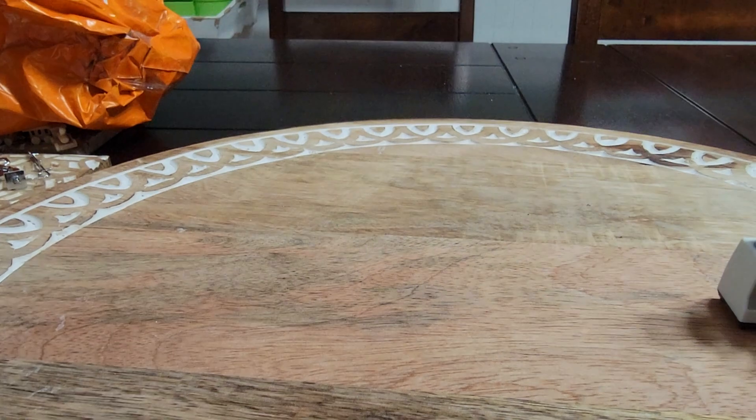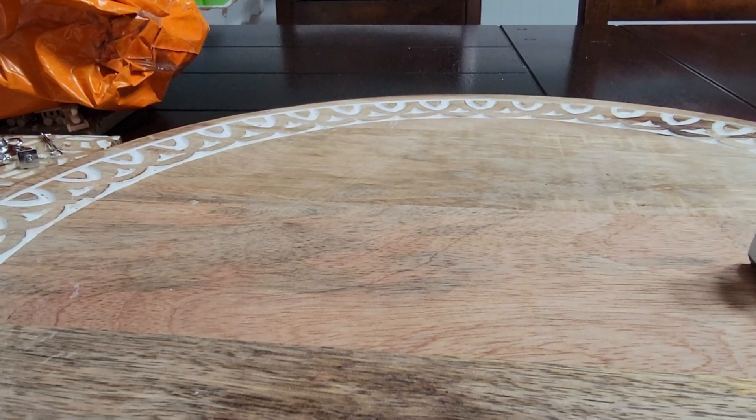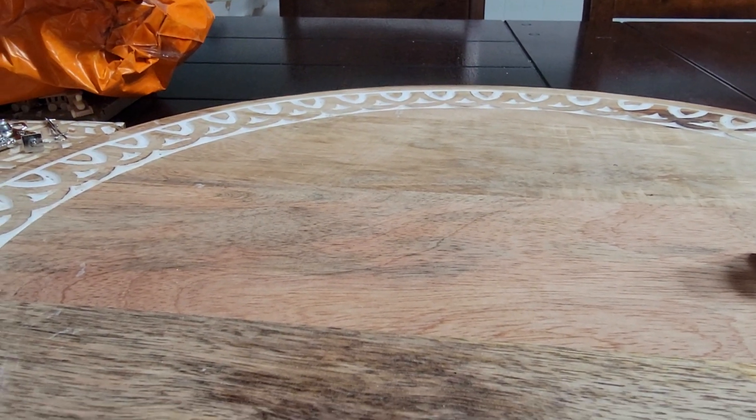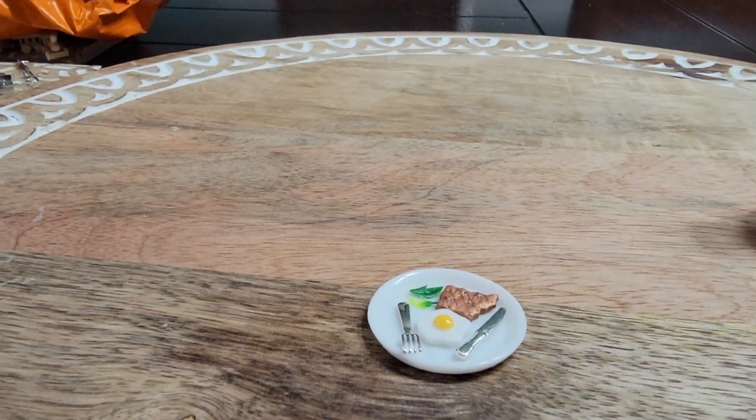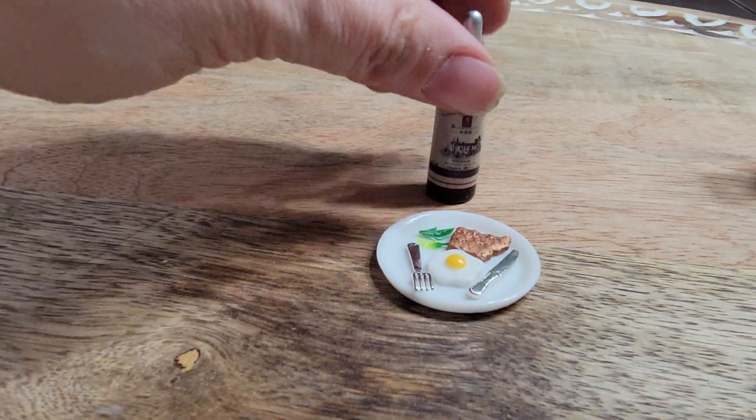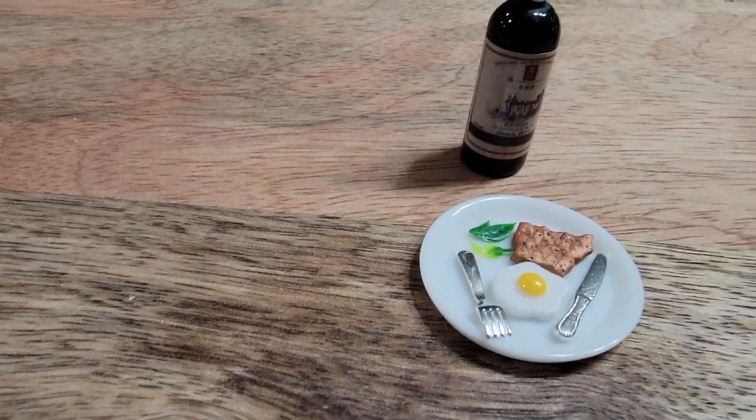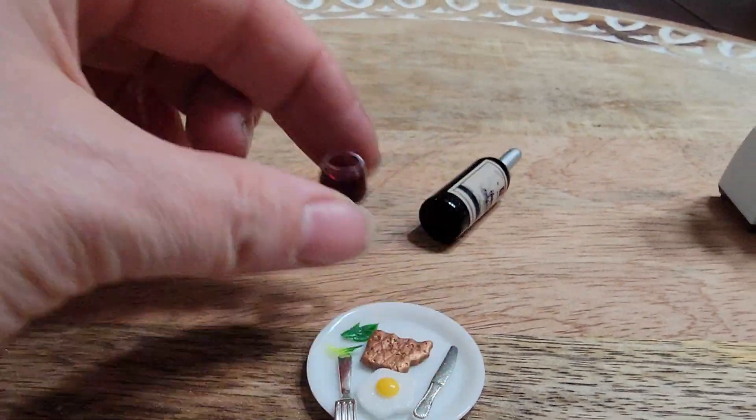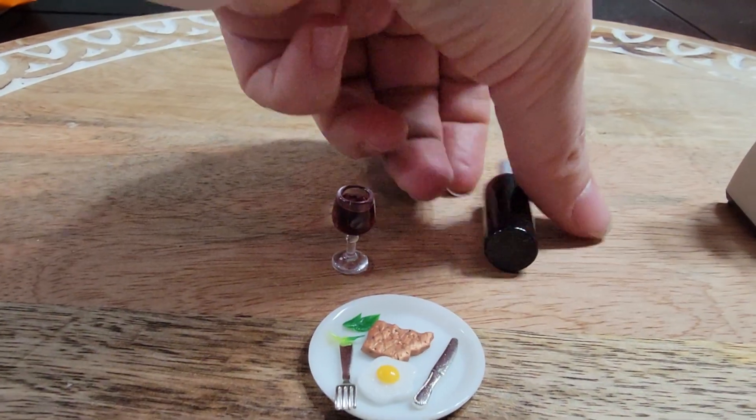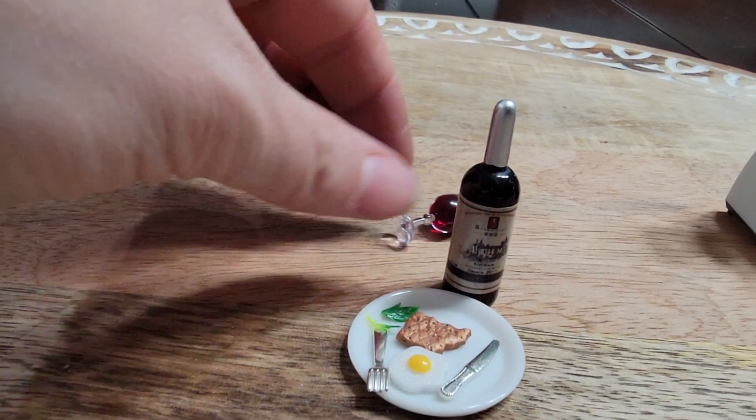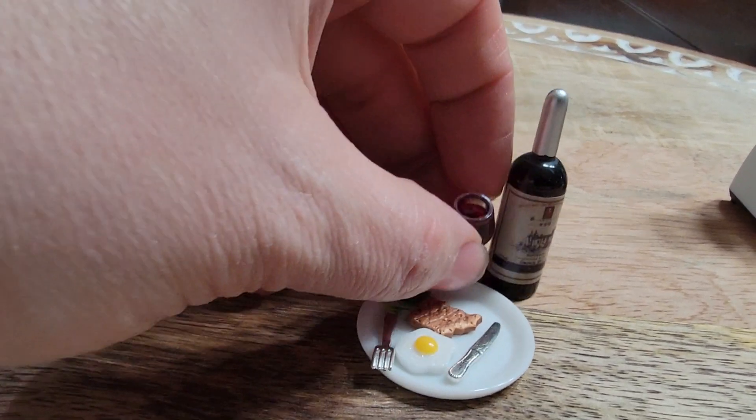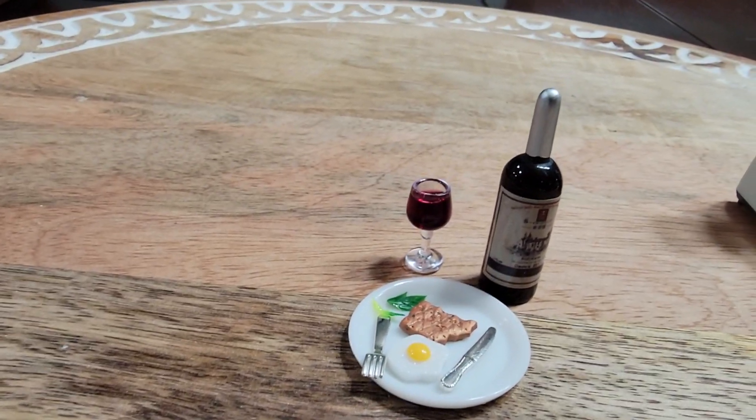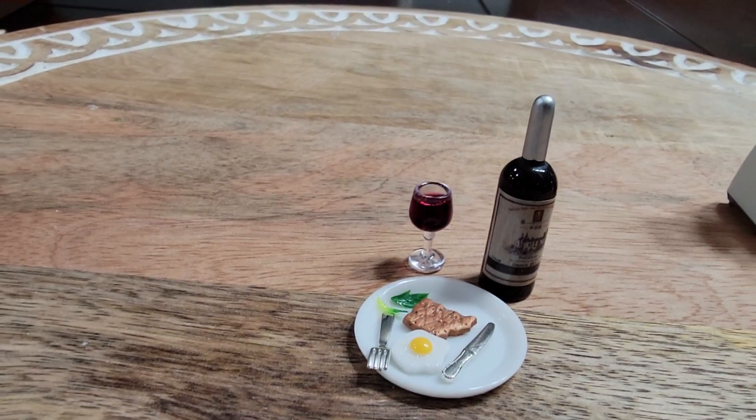Pardon me for holding the camera but my tripod broke. Again, in a 1:6 I got this plate of food. It came with the egg, the steak, some garnish, a bottle of wine, and a glass of wine. And this whole thing was like $4. I think it's adorable. It's a true 1:6 so Barbie size.